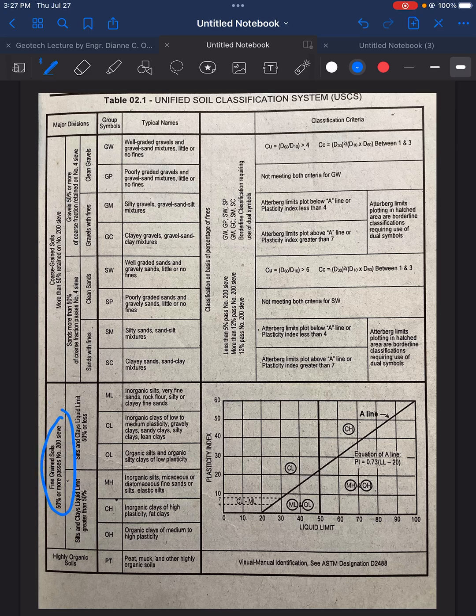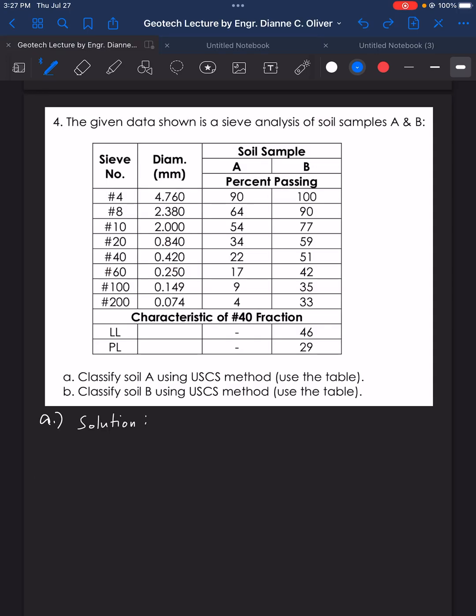Looking at the given here, the data, what's the percent passing for sieve number 200? It's 4%, 4% passing and 96% retained. Which means that there are more particles retained than there is passing the sieve.